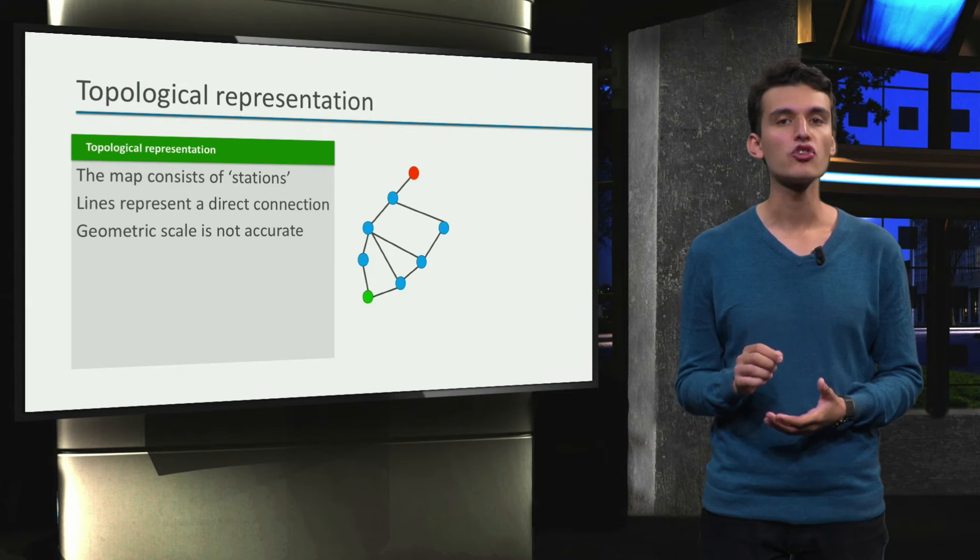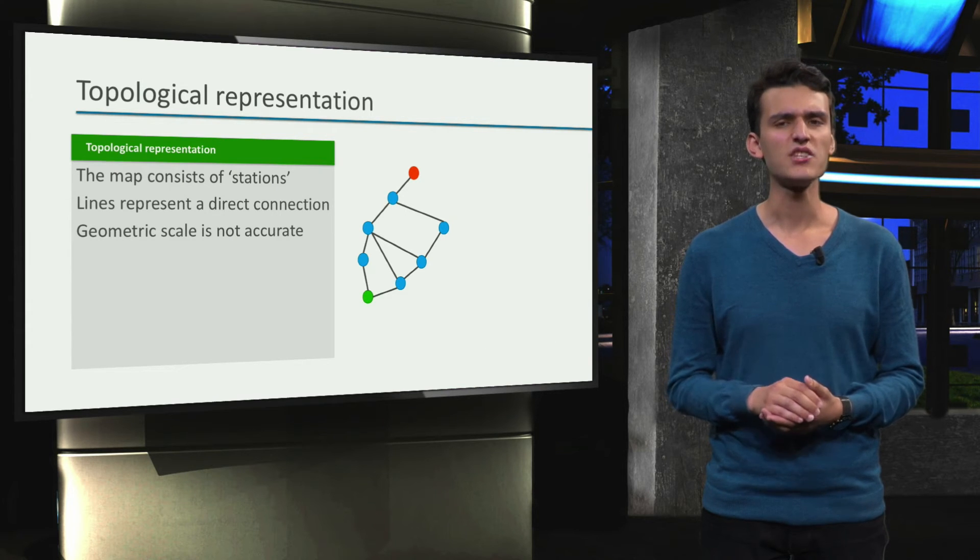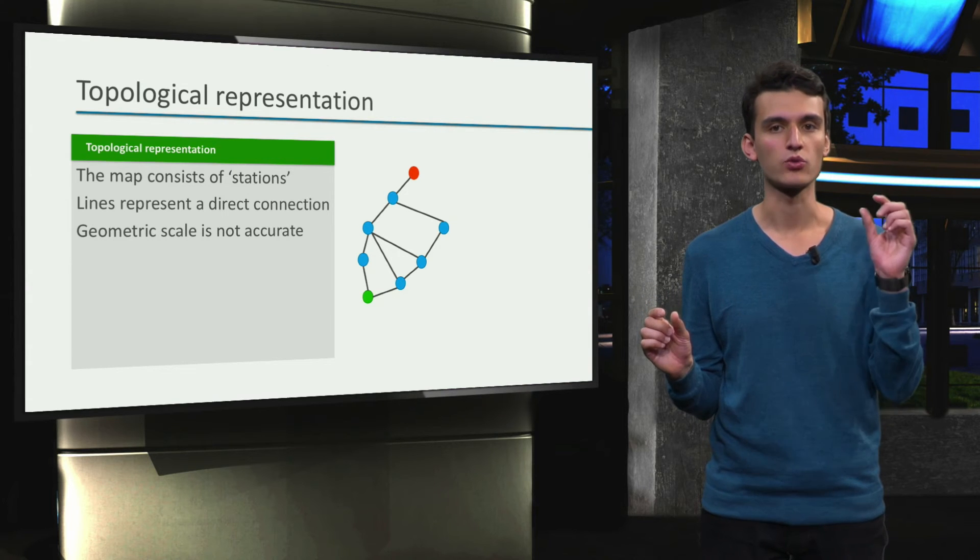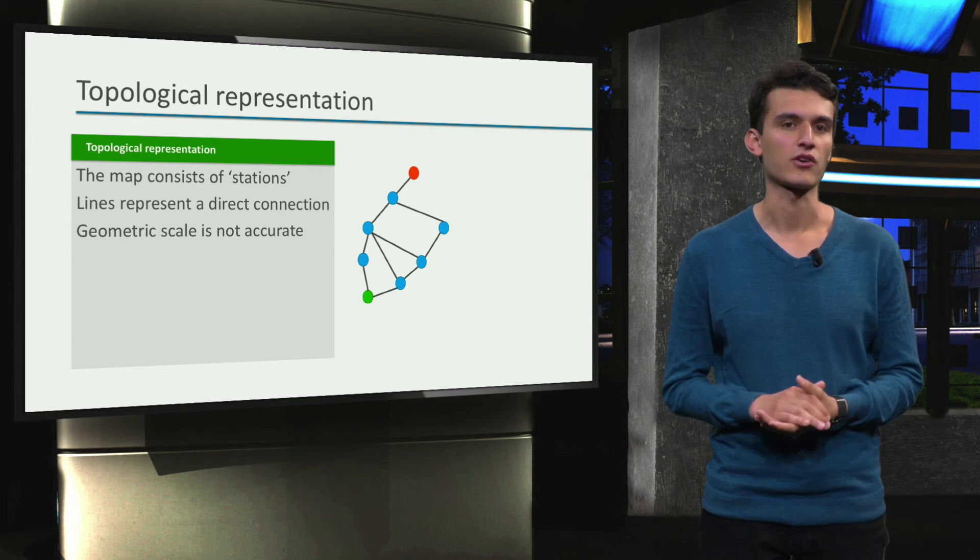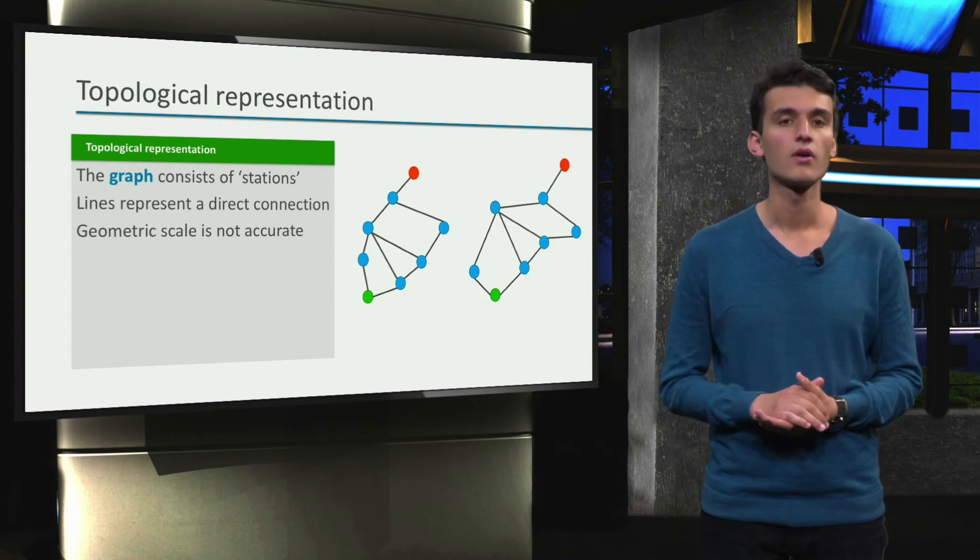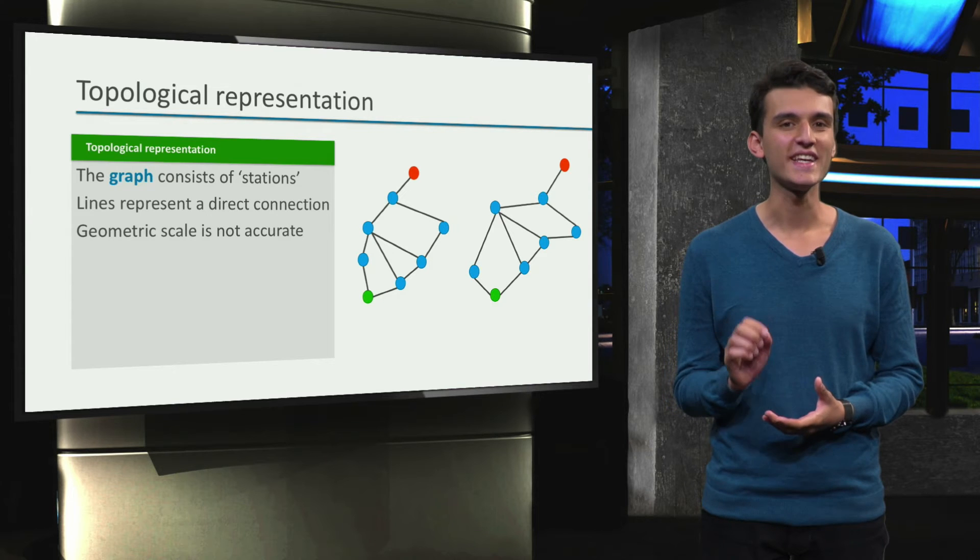This is called a topological representation. It's basically a graph. I start off at the blue station, and I want to go to the red one. The geometric scale does not need to be accurate. I could have also drawn it like this. Both representations are equally valid.